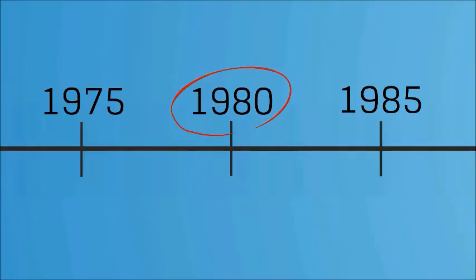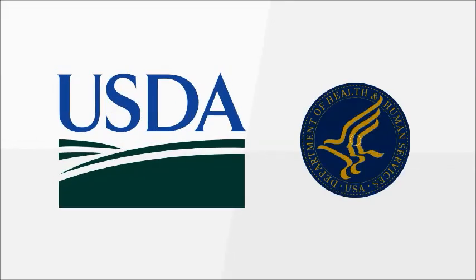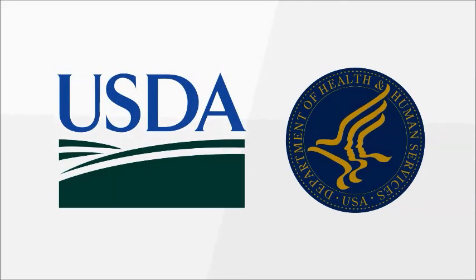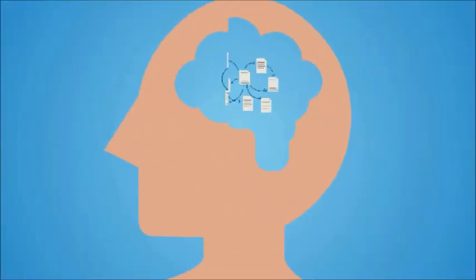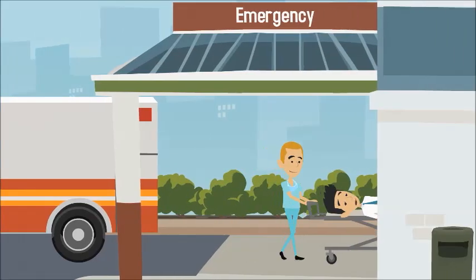Every five years since 1980, the U.S. Department of Agriculture and the U.S. Department of Health and Human Services have published a set of guidelines designed to help Americans understand how to eat a healthy diet and reduce the risk of chronic disease.